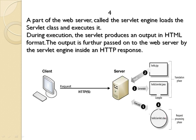After the class file is generated, the servlet engine loads the servlet class and executes it. The task of the JSP engine is to convert the JSP to Java code and compile it to the class file; then the task is handed over to the servlet engine, because now it has become a servlet. The servlet engine loads the HelloServlet.class file and executes it. During execution, the servlet produces output in HTML format. This output is passed to the web server by the servlet engine inside an HTTP response.